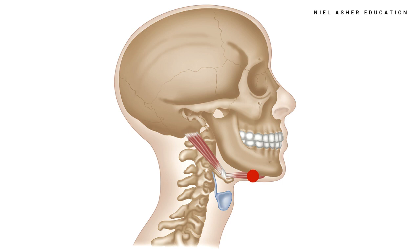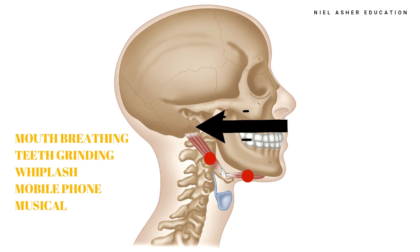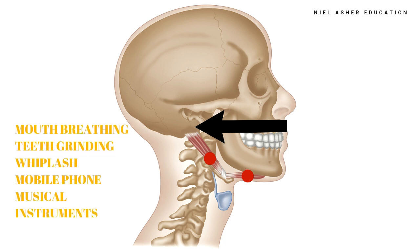So what causes the pain? Trigger points in the digastric may be secondary to surrounding muscles; the masseter has been specifically identified to induce this condition. Mouth breathing may perpetuate on the basis that mouth breathers retract the jaw to take in breath. Other causes include bruxism, teeth grinding, whiplash injuries, holding a telephone to the chin, and musical instruments such as the violin or wind instruments.